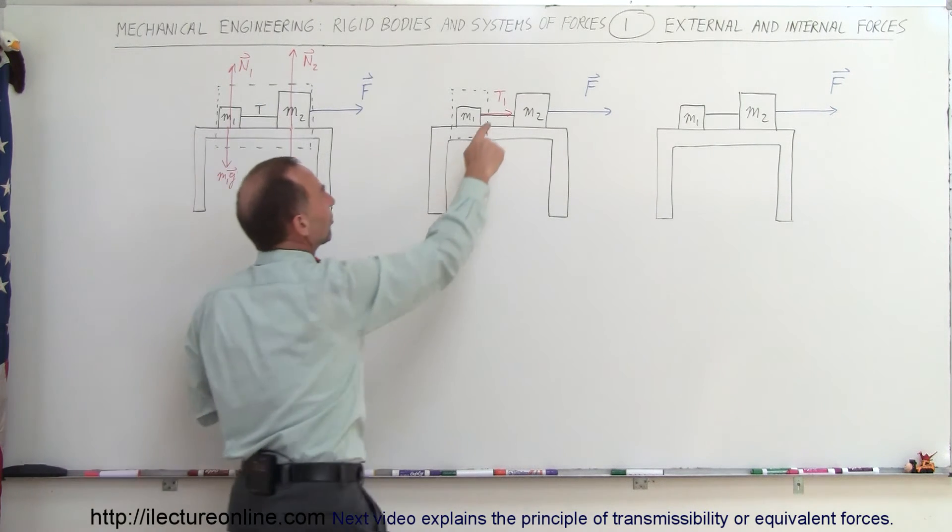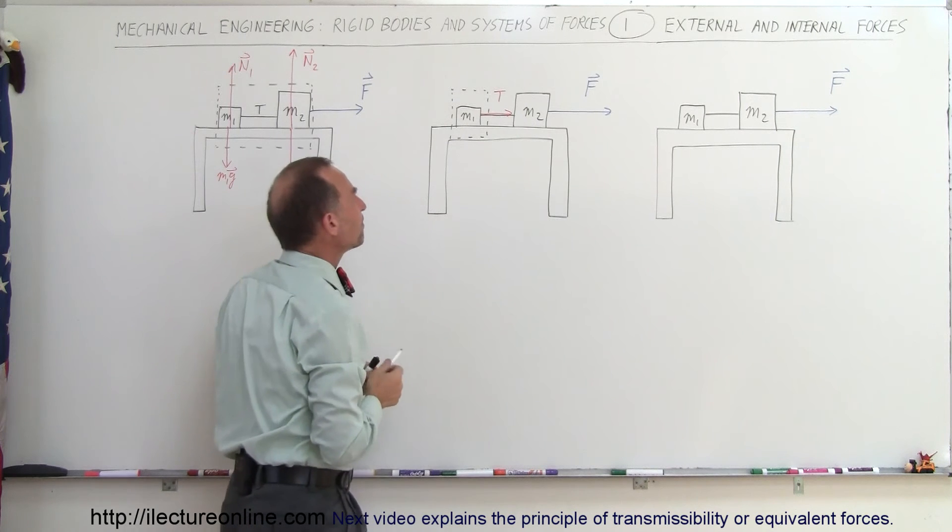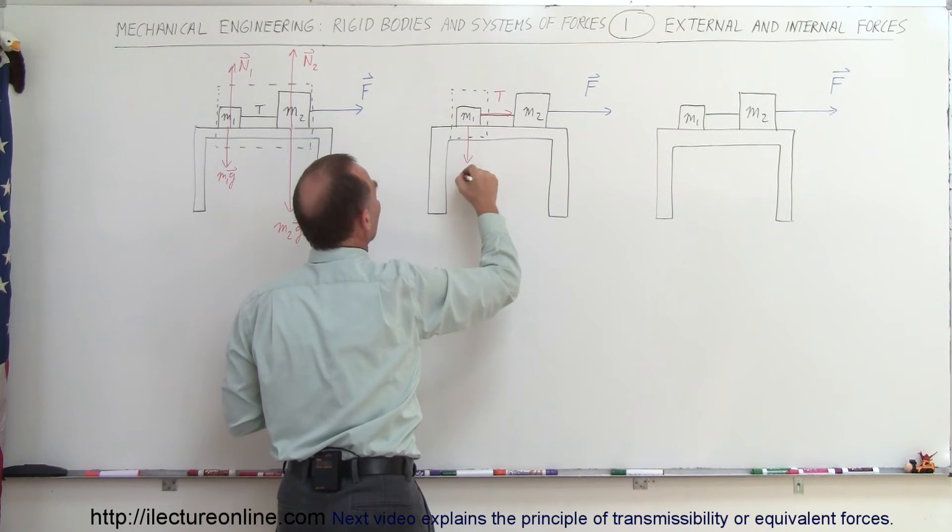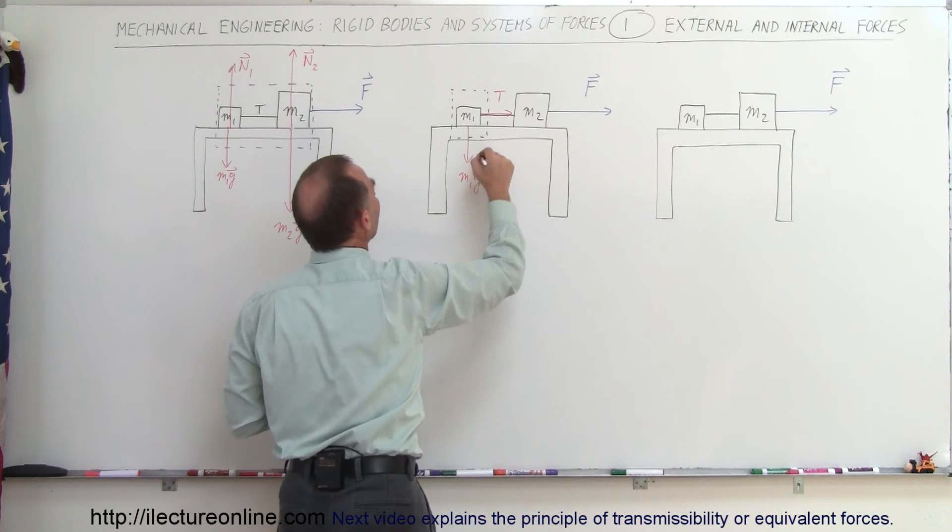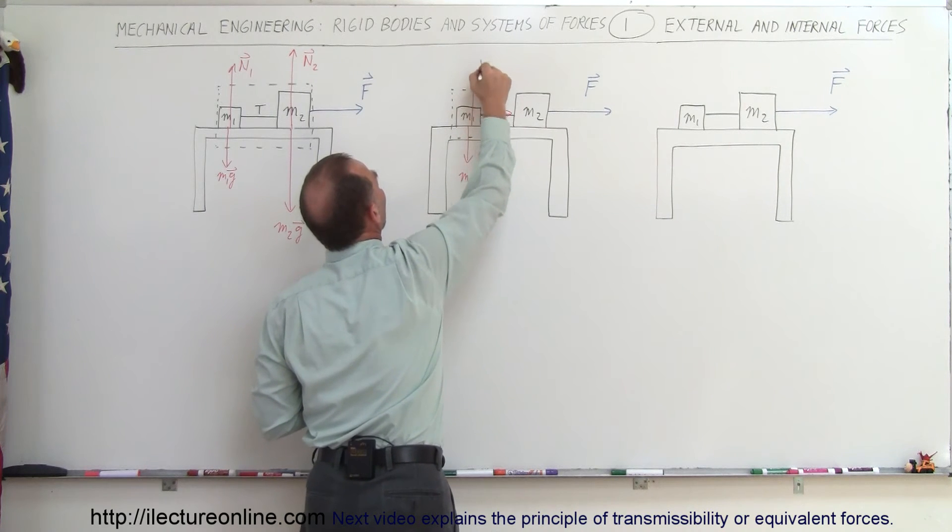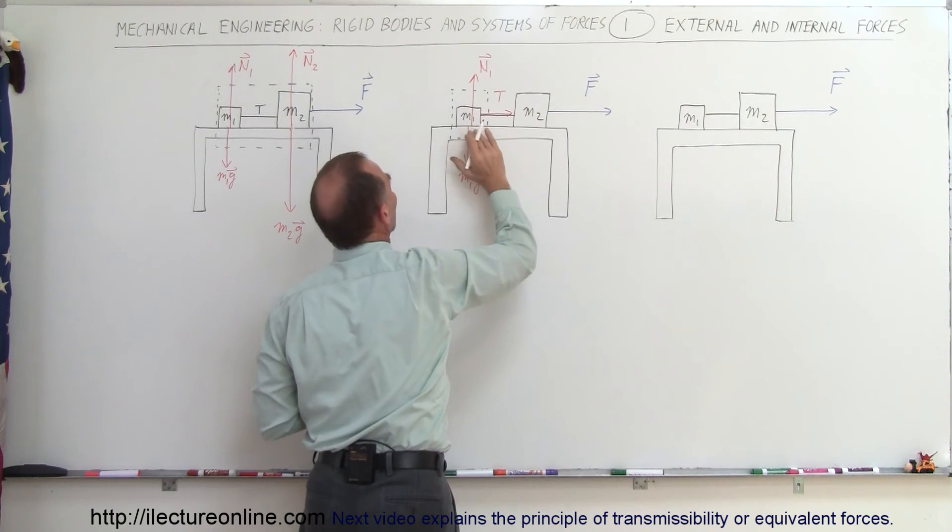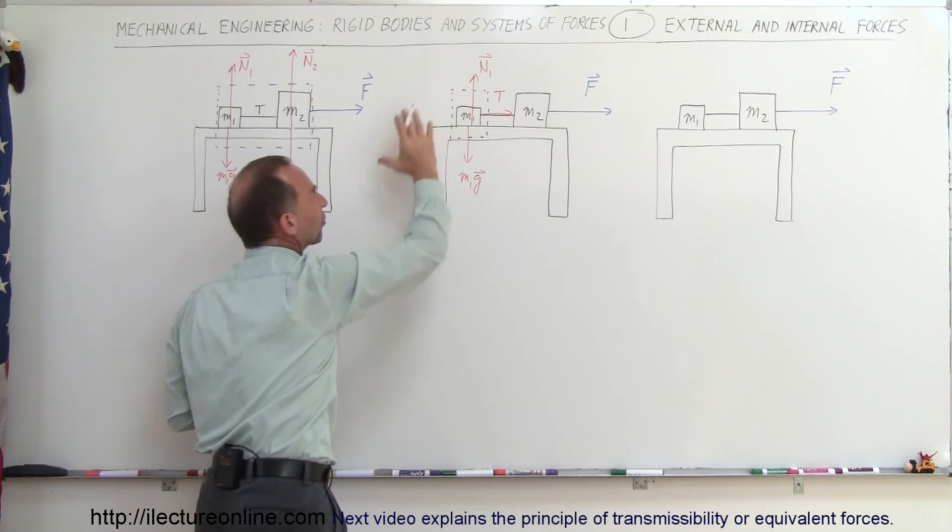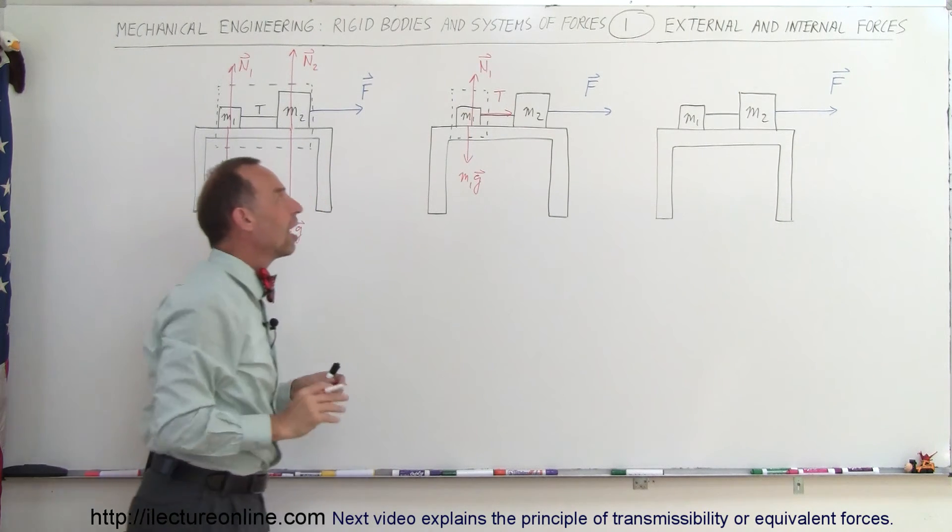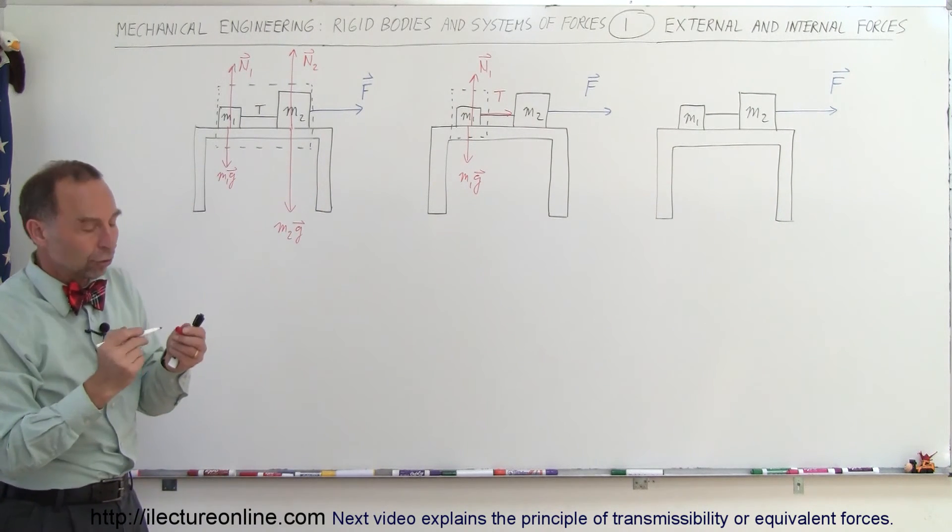I don't have to call it T1, I can simply call it T. We still have M1G, the force of gravity, pulling down and then we have the normal force, N1, pushing back. So it's the surface of the table pushing back. So now there are three external forces on M1, there's no internal force at that point.